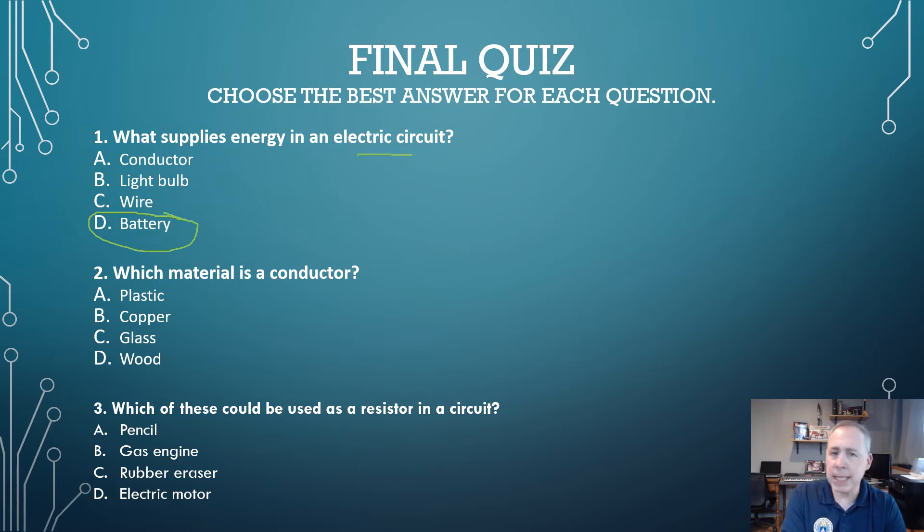Number two, which material is a conductor? Now, we didn't go over this too much in this series, in this first lesson, but we're going to do that in other lessons to come. So stay tuned. So which material is a conductor? Plastic, copper, glass, or wood? Well, I think you've remembered from our experiment earlier that copper wire is what we use. So that's got to be a pretty good conductor to move electrons through the conduit. So which of these could be considered or used as a resistor in a circuit? So remember, a resistor is something that it provides a load. It's going to generate heat, it could generate motion. So a pencil, a gas engine, a rubber eraser, or an electric motor. That's right. Electric motor would be considered a resistor in a circuit.